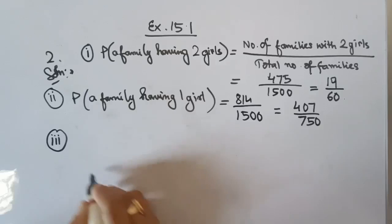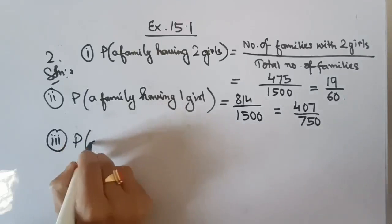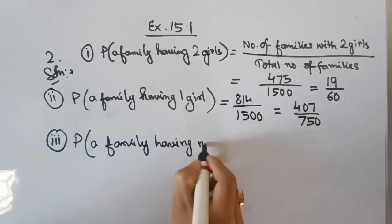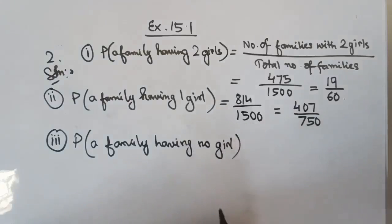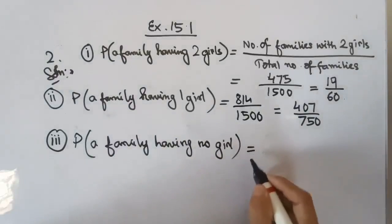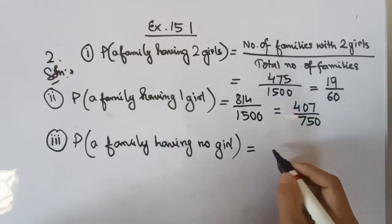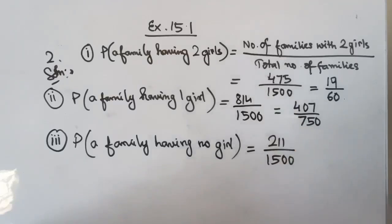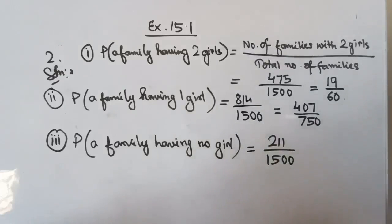For part 3, the probability of a family having no girl child is equal to the number of families with no girl child — that is 211 — divided by the total number of families, 1500. This cannot be reduced further, so the probability is 211 by 1500.